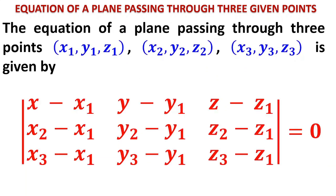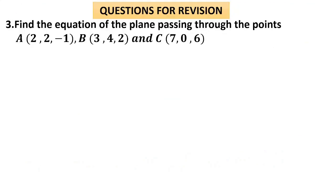To eliminate a, b, c we use a 3×3 determinant set equal to zero. The first row is (x minus x₁, y minus y₁, z minus z₁), and the second and third rows are the coefficients of a, b, c from the second and third equations respectively. Sometimes four points are given to prove coplanarity — find the plane through any three, then verify the fourth point satisfies the equation.